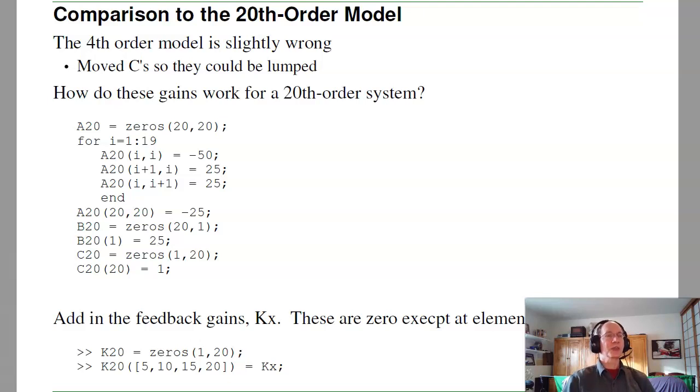So that's for a fourth order system. The actual plant is not fourth order. How does this behave with the 20th order model? To do that, I can input a 20th order model. This is the 20th order system. It's minus 50 on the diagonals, 25 on the off diagonals. 25 is 1 over RC for the 20 element model, almost 1 for the other one because R is 5 times bigger, C is 5 times bigger. Together, RC becomes 25 times bigger. 1 over RC is 25 times smaller. But that's how you get the fourth order model. Here's the A, B, and C for the 20th order model.